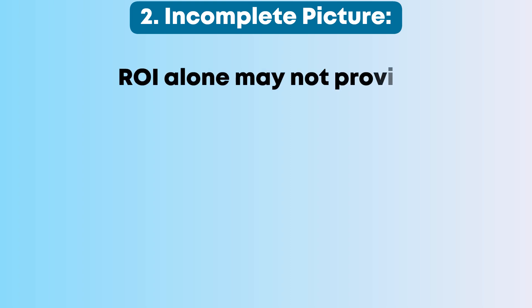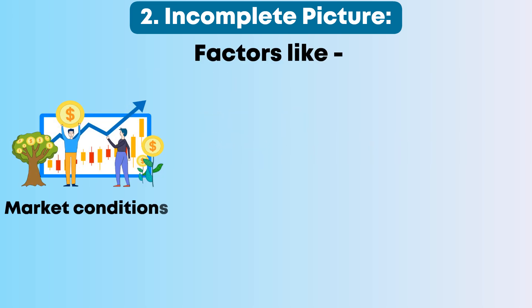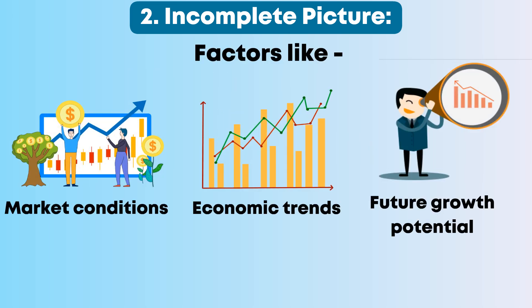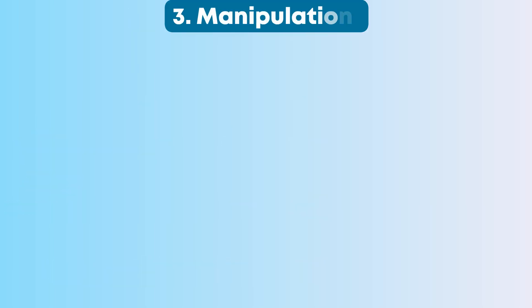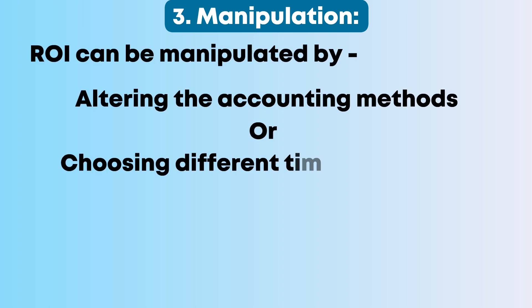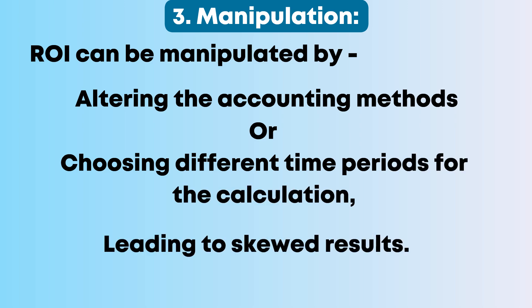Second, incomplete picture: ROI alone may not provide a complete picture of an investment's profitability. Factors like market conditions, economic trends, and future growth potential are not considered in the ROI calculation. Third, manipulation: ROI can be manipulated by altering the accounting methods or by choosing different time periods for the calculation, leading to skewed results.